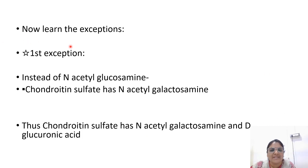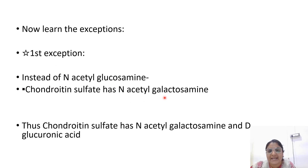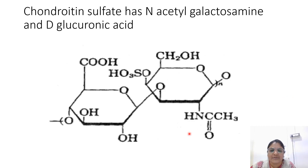Now you have to learn the exceptions. First exception: instead of N-acetylglucosamine, in chondroitin sulfate it is N-acetylgalactosamine. Thus chondroitin sulfate has N-acetylgalactosamine and D-glucuronic acid. You can see the structure of chondroitin sulfate containing N-acetylgalactosamine and D-glucuronic acid.